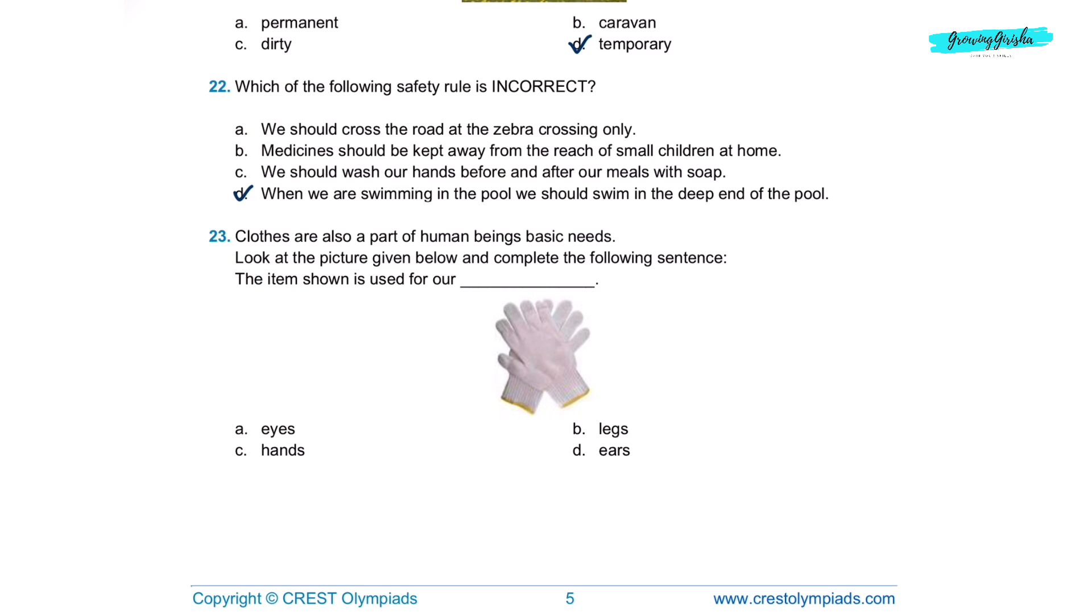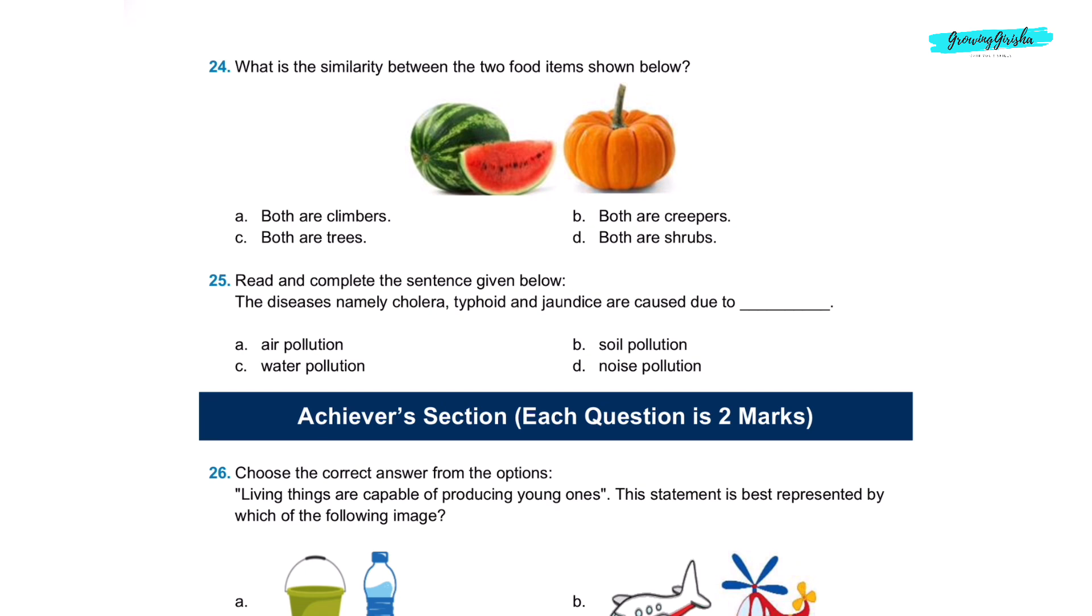Question 23. Clothes are also a part of human beings' basic needs. Look at the picture given below and complete the following sentence. The item shown is used for our option C, hands. Question 24. What is the similarity between the two food items shown below? Option B, both are creepers. Creepers means the plants who can't climb like climbers. They creep on the ground.